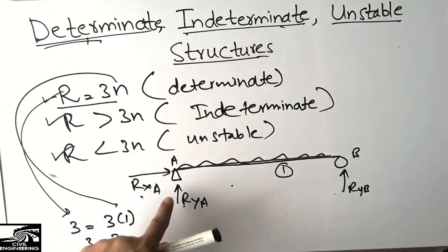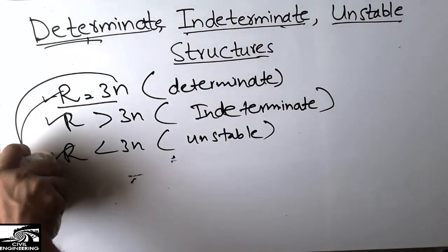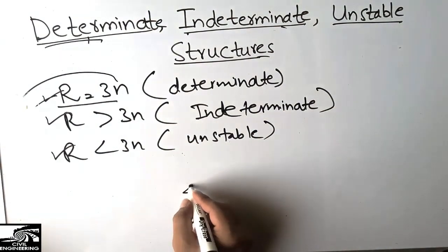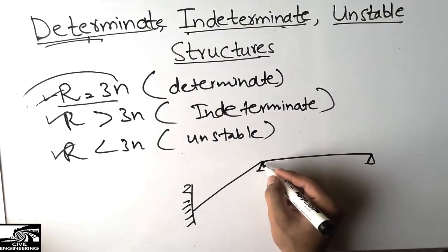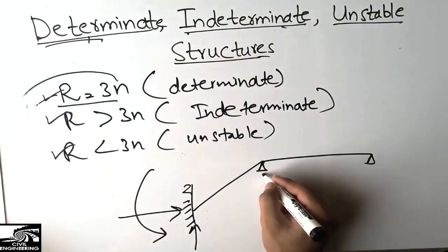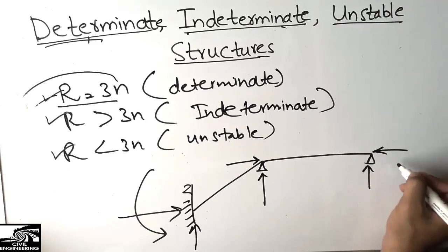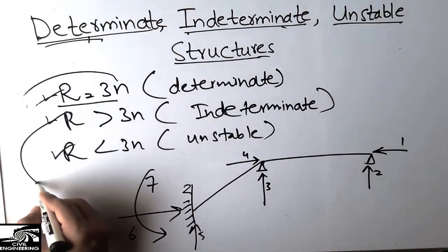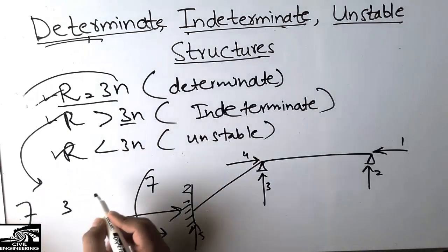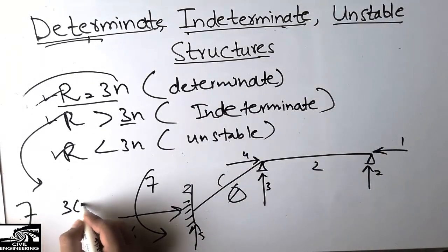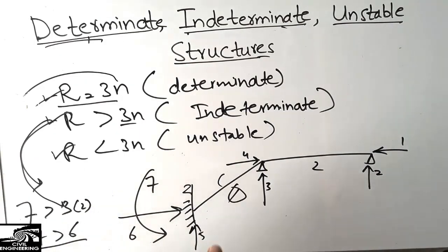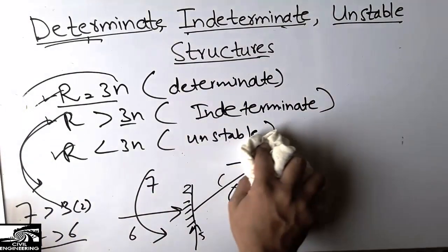Now taking an example of a frame structure supported at two points. At the supports we have: one horizontal, one vertical, and one moment at one support, and one horizontal and one vertical at the other — giving a total of seven unknown reactions, so r = 7. There are two segments, so n = 2, and 3n = 6. Since 7 > 6, this is an indeterminate structure, which cannot be solved by simple equilibrium equations alone and requires compatibility conditions.